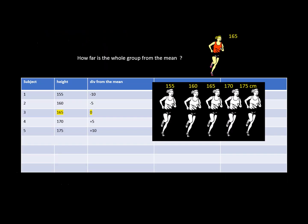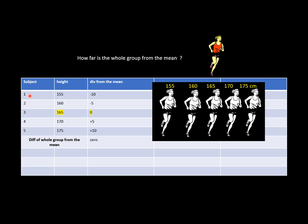Take a group with heights of 155, 160, 165, 170, and 175. Adding these and dividing by five gives a mean of 165. The first person is shorter by 10 cm, the second by 5, the third has no difference, the fourth is taller by 5, and the last by 10. If you add all these differences you end with zero, because some values are minus and some are plus — the mean is exactly in the middle.